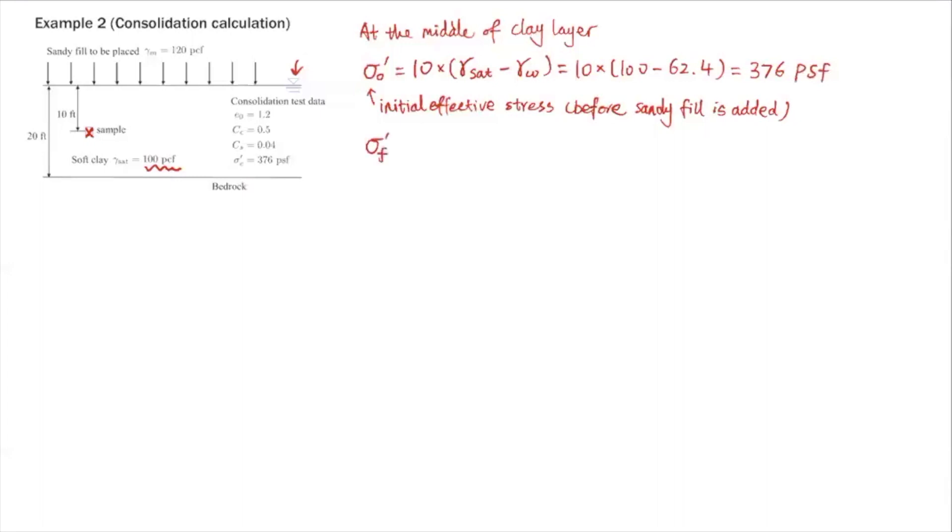The final effective stress after sandy fill is put on top—this final effective stress is the initial value plus the change in effective stress due to that 10 feet of sandy fill. So it's 10 feet of gamma moist. That's the change in stress due to that 10 feet of sandy fill: 10 times gamma moist of sand. So that is 376 plus 10 times the moist unit weight of sand. That sandy fill is 120. So the final effective stress in this case is 1576 PSF, pounds per square foot. That is the final effective stress after you put the sandy fill on top.